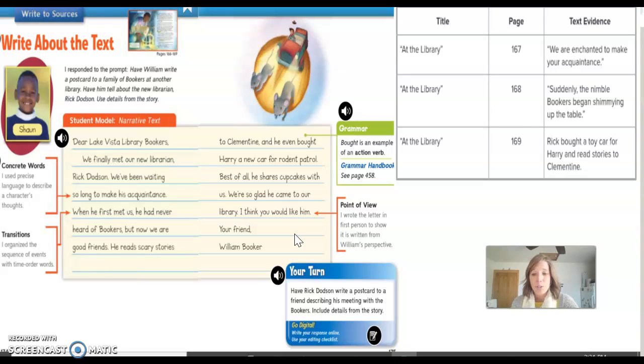It is your turn. Make sure you have a piece of paper and a pencil. Have Rick Dodson write a postcard to a friend describing his meeting with the bookers. Include details from the story.